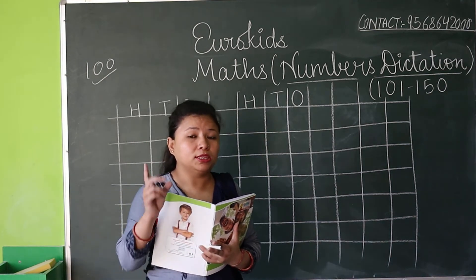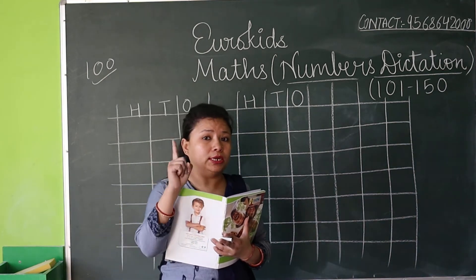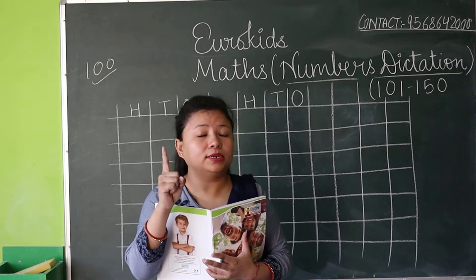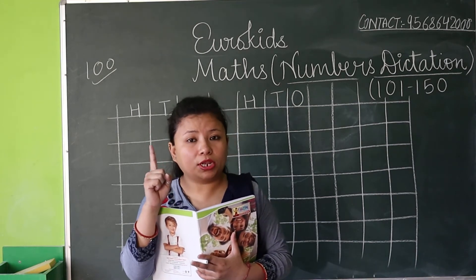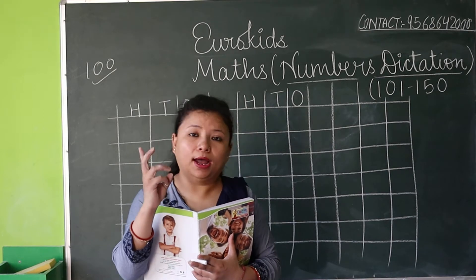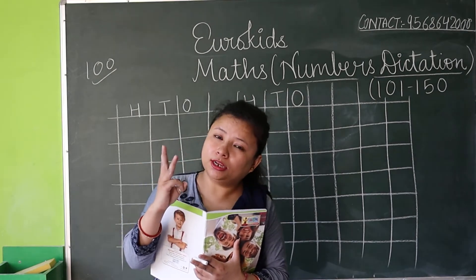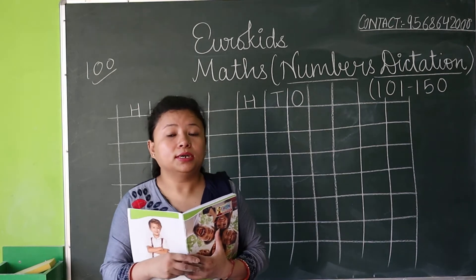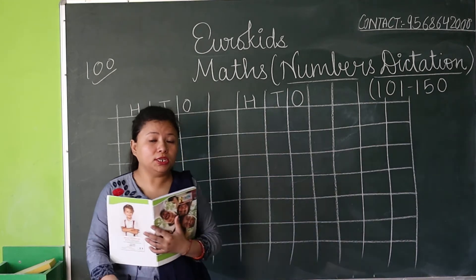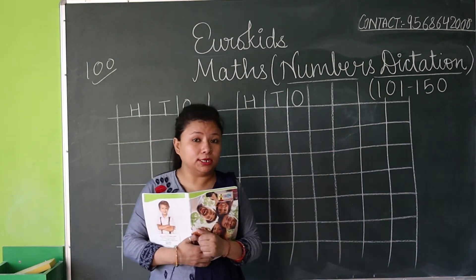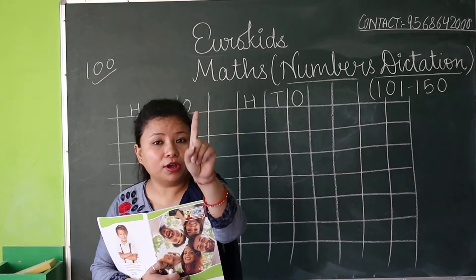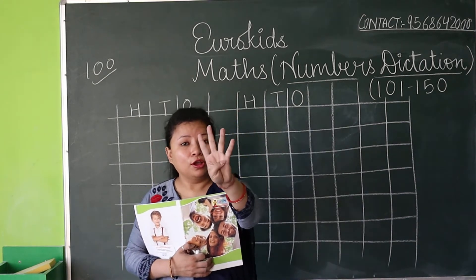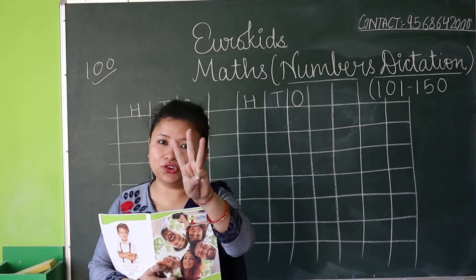143. Now see — there are three sounds: hundred means one, 40 means four, and three. It is very easy, na — 143. Ma'am will explain: hundred means one, 40 means four, and three — 143.